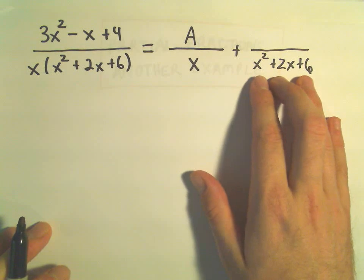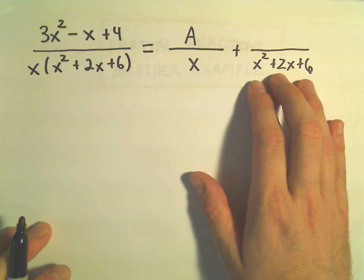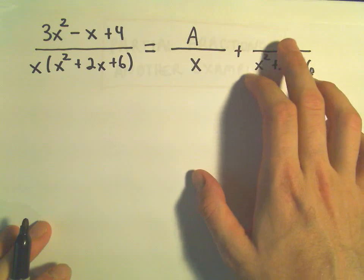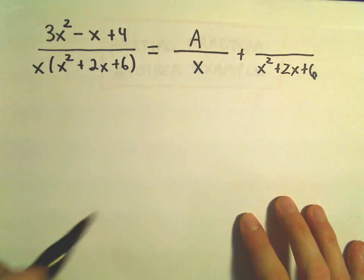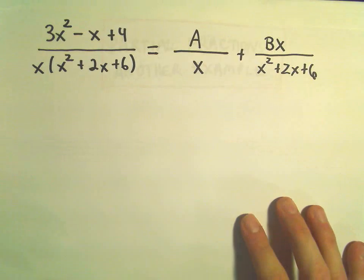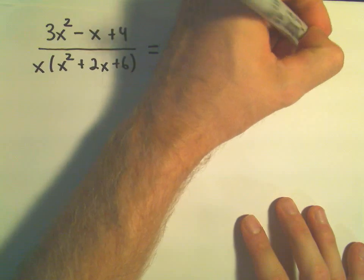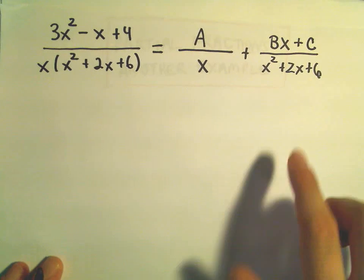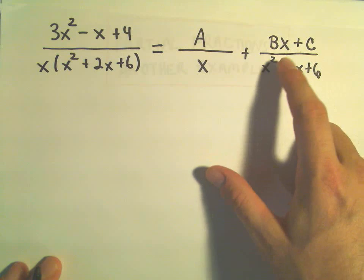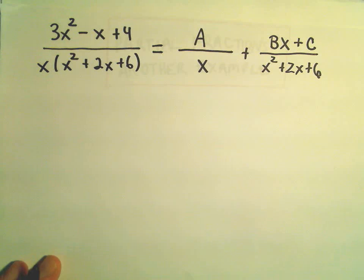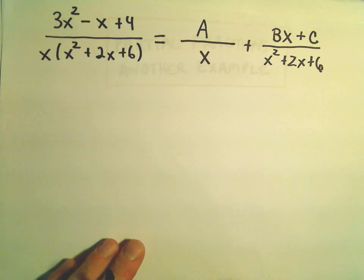But in our second fraction, we have a quadratic, a degree 2. I'm going to write something that's degree 1 in the numerator, something generic. So B times x, that's linear, that's 1 degree less, but you could have some constant hanging out there with it. This would still be a linear term in the numerator. We have a quadratic term in the denominator. And this is how the partial fraction decomposition works.